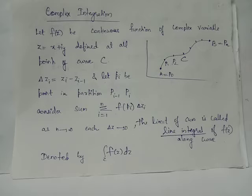If you consider the sum, summation i ranges from 1 to n, f of pi times delta z,